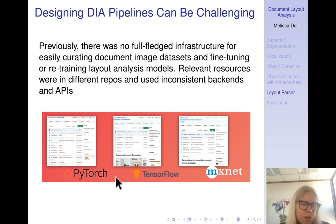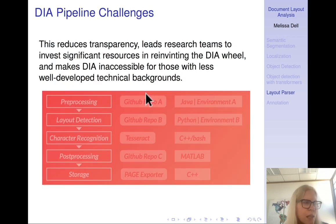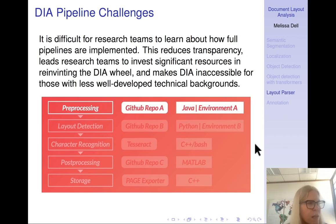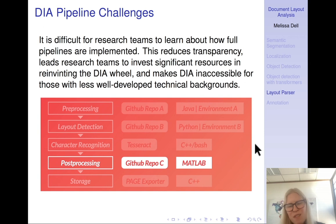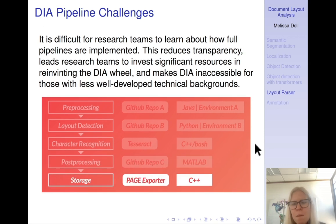Previously, when we started working on this a few years ago, there was no full-fledged infrastructure for easily curating document image datasets and fine-tuning or retraining layout analysis models. The relevant resources were in different repositories and used inconsistent backends and APIs. Just to give an example, you need to pre-process your data, and you could do that in Java, and then to do the layout detection, that's in PyTorch, and then character recognition, you might use Tesseract and you need to call that using C++, and then post-processing, maybe there'd be a relevant repository, but that was in MATLAB. This leads to pipelines that are quite convoluted. They're not very reproducible, and it's not very accessible to people who don't have a super strong background in programming.